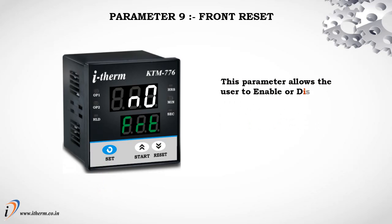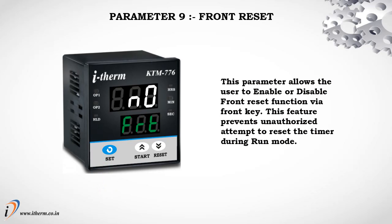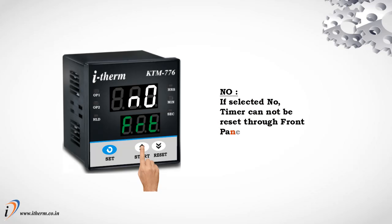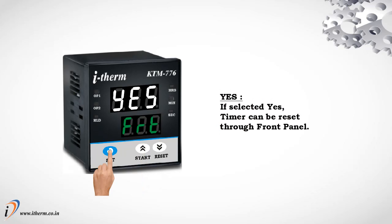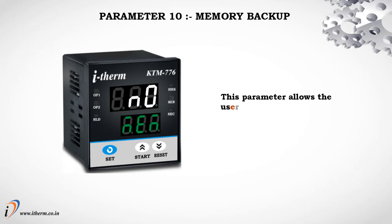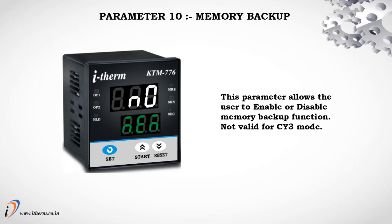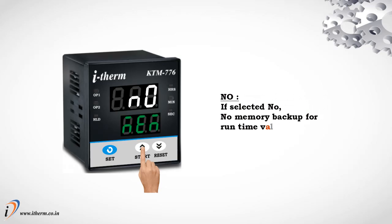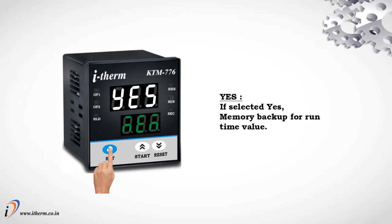Parameter 9: Front Reset. This parameter allows the user to enable or disable the Front Reset function via the front key. This feature prevents unauthorized attempts to reset the timer during Run Mode. If No is selected, the timer cannot be reset through the front panel. If Yes is selected, the timer can be reset through the front panel. Parameter 10: Memory Backup. This parameter allows the user to enable or disable Memory Backup. Not valid for Cycle 3 mode. If No, there is no memory backup for runtime value. If Yes, memory backup is enabled for runtime value.